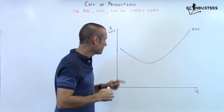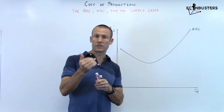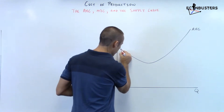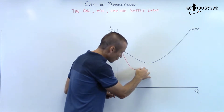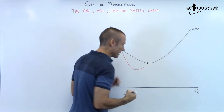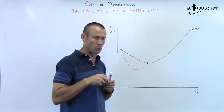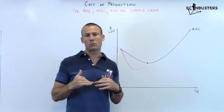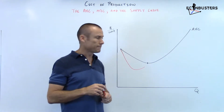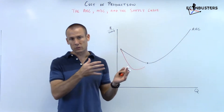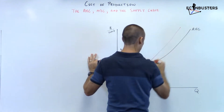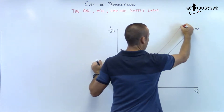Now we add in the marginal cost curve. If the average is going down, the marginal cost — the additional cost of the next unit — must be less than the average; that's the only reason it's being pulled down. I'm going to draw part of it and stop intentionally. It doesn't matter if MC is downward or upward sloping — if it is below the average, it's pulling the average down. Conversely, if the average is coming up, MC must be greater than the average.